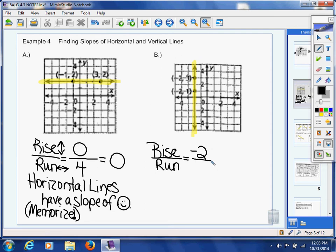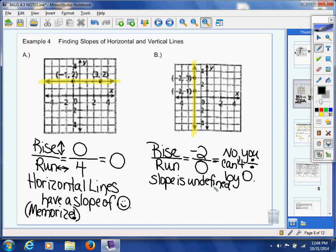And then our run, I'm on top of the point I want to be at. I don't need to go left or right. So if you don't need to move left or right, place a zero there. Now, we have a very big problem here. Can you divide by zero ever? And the answer is no. And I want you to make a note. No, you cannot divide by zero ever.